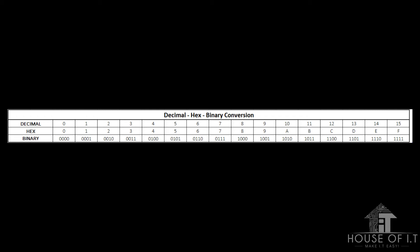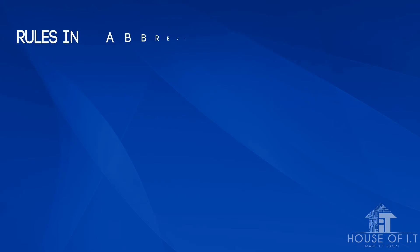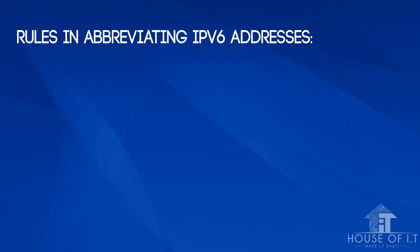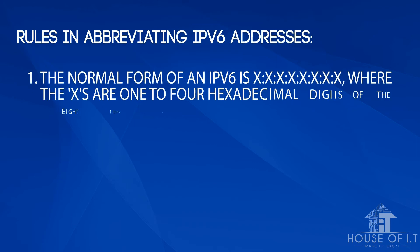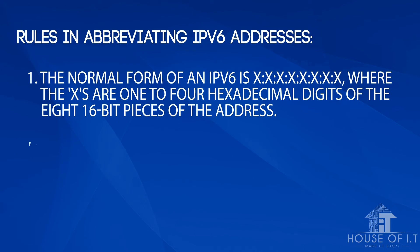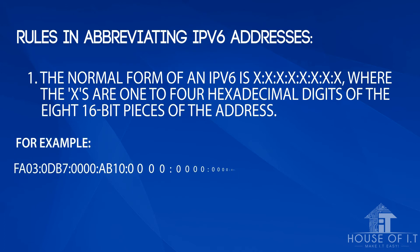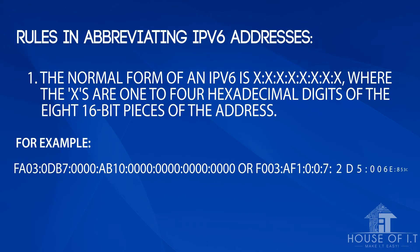The downside is that you now have a lot of digits to memorize for your IP address, but there are some ways to abbreviate these addresses. The normal form of an IPv6 address is 8 groups separated by colons, where each group is 1 to 4 hexadecimal digits representing the 8 sixteen-bit pieces of the address.